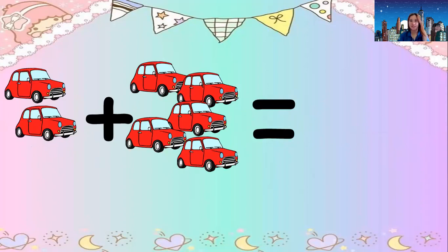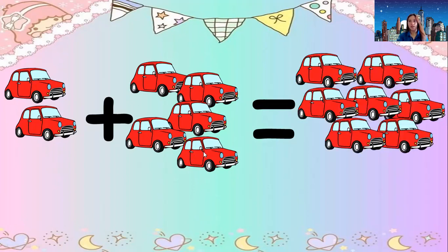What do you see in the picture? It's a car. Let's add the cars. Two cars plus one, two, three, four, five cars equals — one, two, three, four, five, six, seven cars. The answer is seven cars. Read: two cars plus five cars equals seven cars.